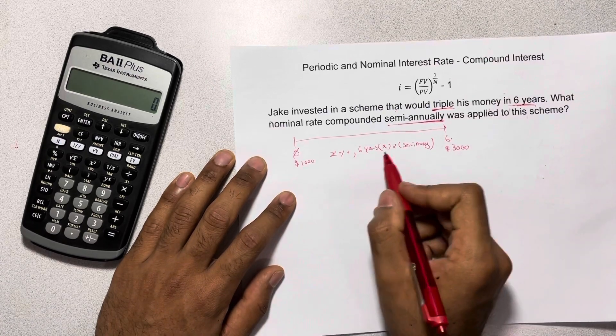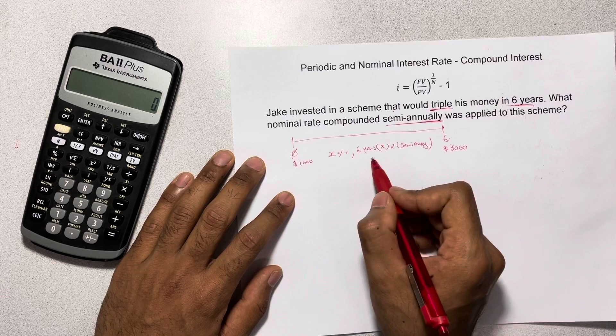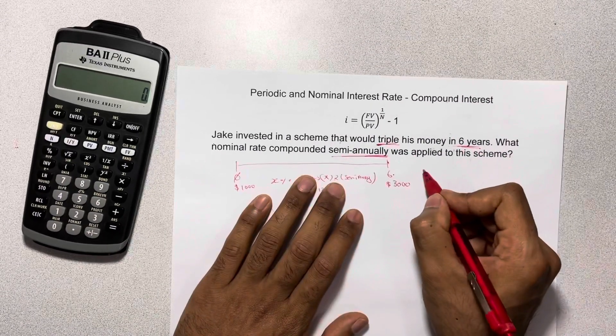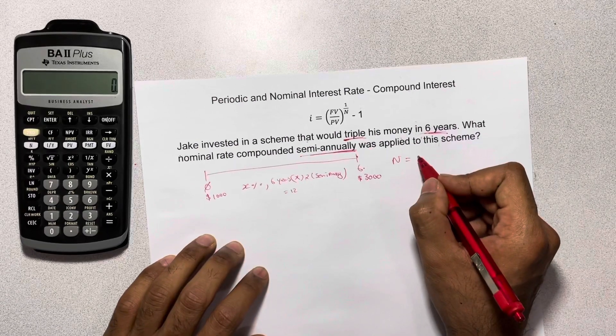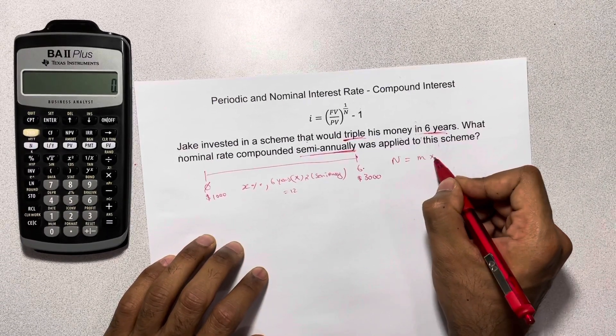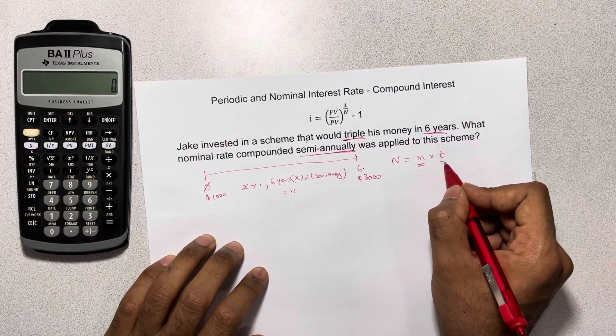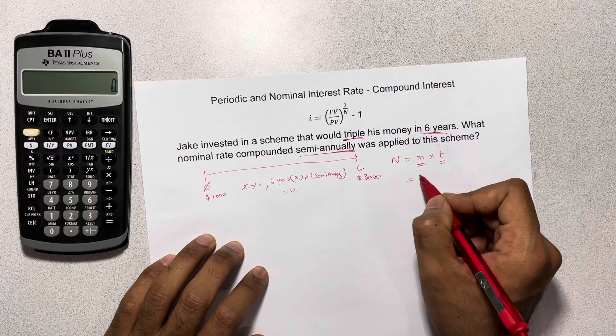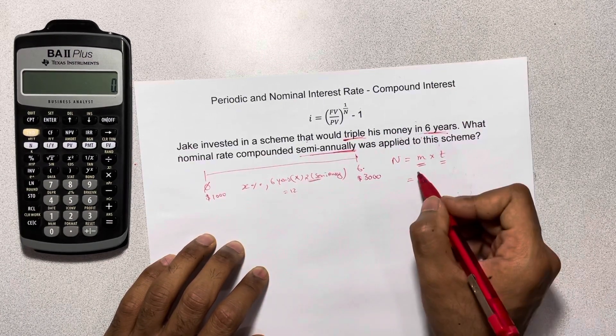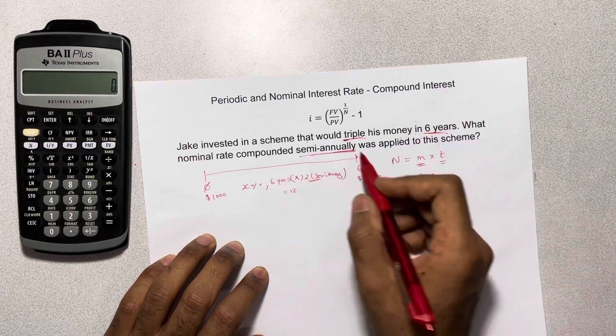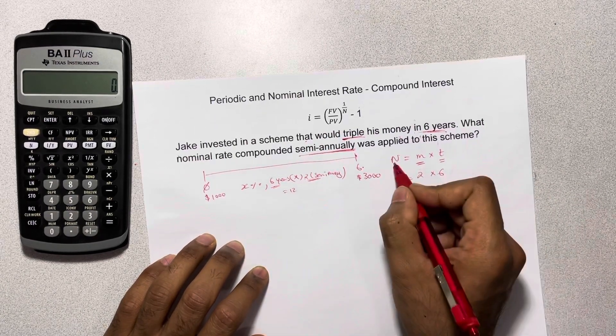Therefore we know that this times this, because we'll have to multiply it, it's going to give us 12, because N is our number of compounding periods. And we could also write that as M times T, where M is your compounding frequency and T is your time frame. So if N is equal to M, which is your compounding frequency which is 2, multiply that by number of years which is 6, and we'll get that 12. So N is equal to 12.